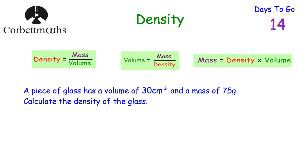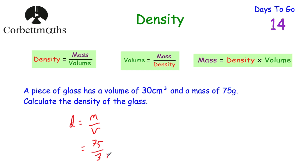Here's a question for you to try. A piece of glass has a volume of 30 centimetres cubed and a mass of 75 grams. Calculate the density of the glass — press pause now and work it out. Using density equals mass divided by volume: 75 divided by 30 equals 2.5. So the density of the glass is 2.5 grams per centimetre cubed — each centimetre cubed of glass is 2.5 grams.